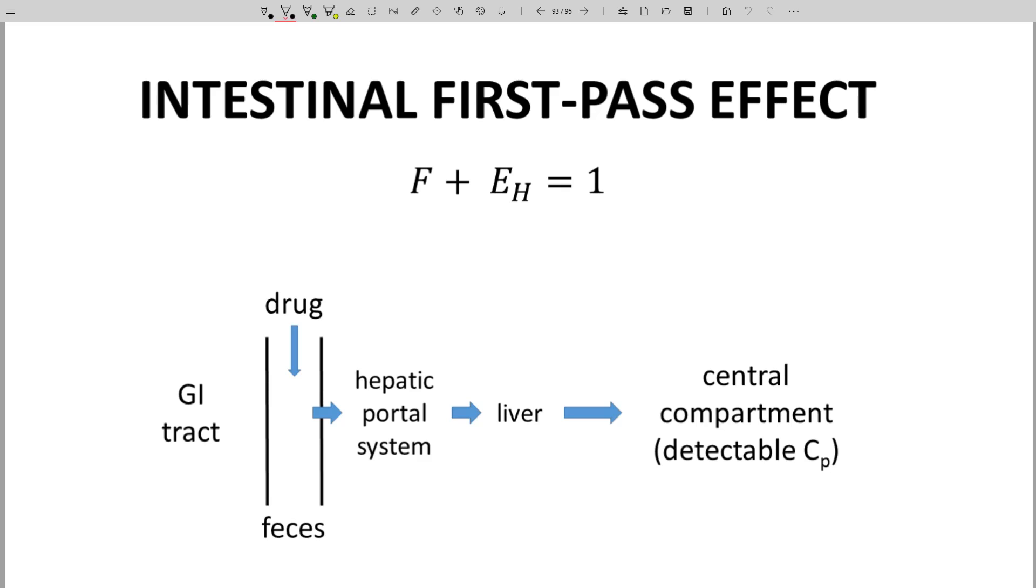This often works okay, but sometimes the numbers on the left come up short. For example, F might be 0.70, EH might be 0.20. Now we're missing 0.1.